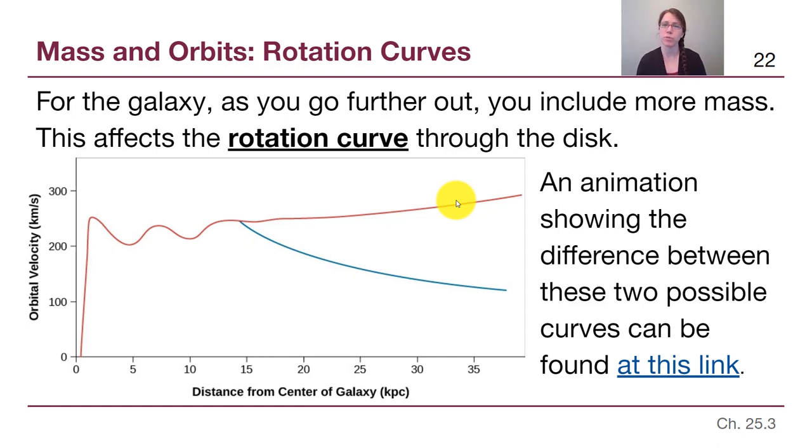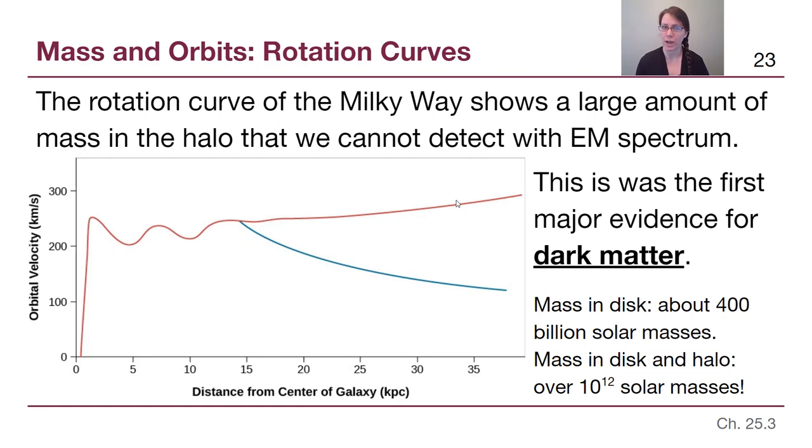Some of you may have heard this term from well before this class. If you guessed dark matter, you are absolutely correct. The rotation curve of the Milky Way galaxy and all major galaxies shows this same relationship of a huge amount of mass in the outer halo regions that we can't see any light coming from. This was the first and is still one of the most important pieces of evidence for what we call dark matter.